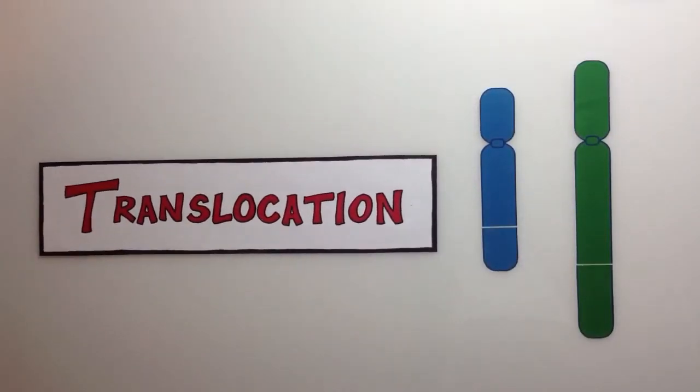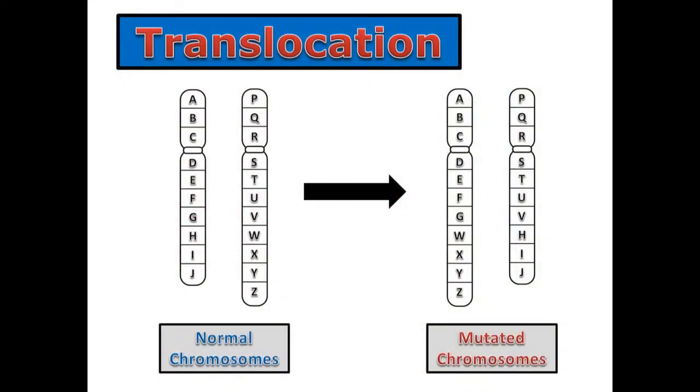Translocations occur when two non-homologous chromosomes accidentally recombine. Two non-homologous or non-matching chromosomes are always involved in a translocation. As a result of this mutation, these two chromosomes will accidentally exchange genetic information.